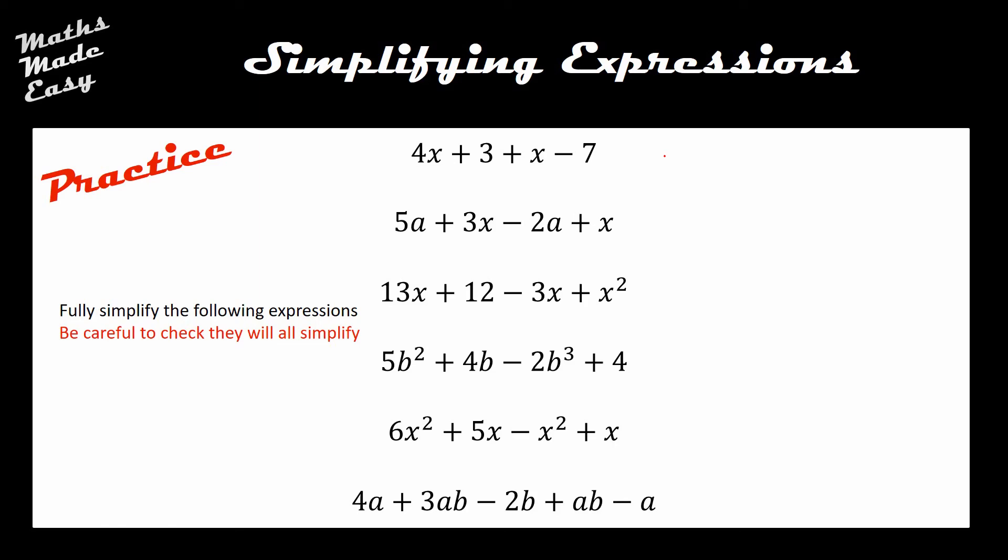Okay, so on this first one I've got 4x's and a single x, so this is going to simplify down to 5x minus 4 when I combine the 3 and the negative 7. This next one I can see that I've got 5a take away 2a which is 3a, and plus 3x plus another x gives me a total of 4x. So far so good, they all simplify.